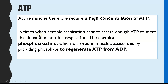In times when aerobic respiration cannot create enough ATP to meet the demand, anaerobic respiration will also occur. If you think about sprinting, runners need a really high amount of ATP rapidly — not for a long period of time. So their muscles will actually respire anaerobically to create this high concentration of ATP rapidly so the muscles can contract and relax. This is assisted by the chemical phosphocreatine, which naturally occurs and is stored in your muscles. It provides phosphates to help regenerate ATP from ADP.